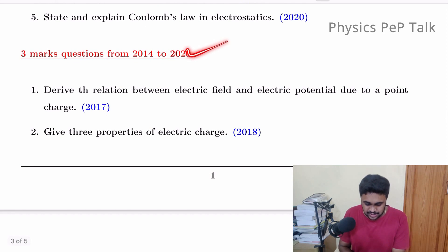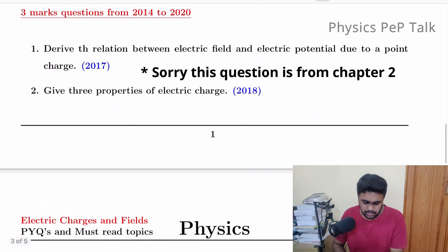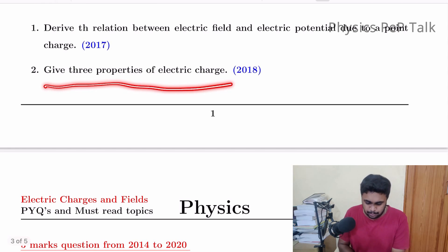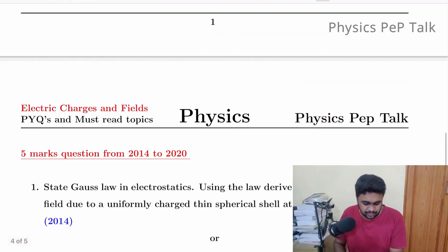Three mark questions. Derive the relation between electric field and electric potential due to a point charge. Give three properties of electric charge. If you have two properties, you have two marks. Give any three properties, this is asked for three marks.